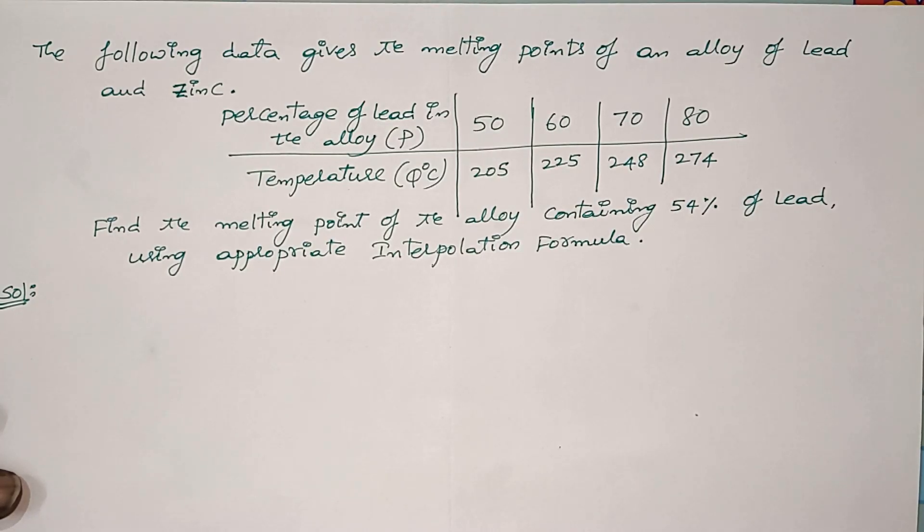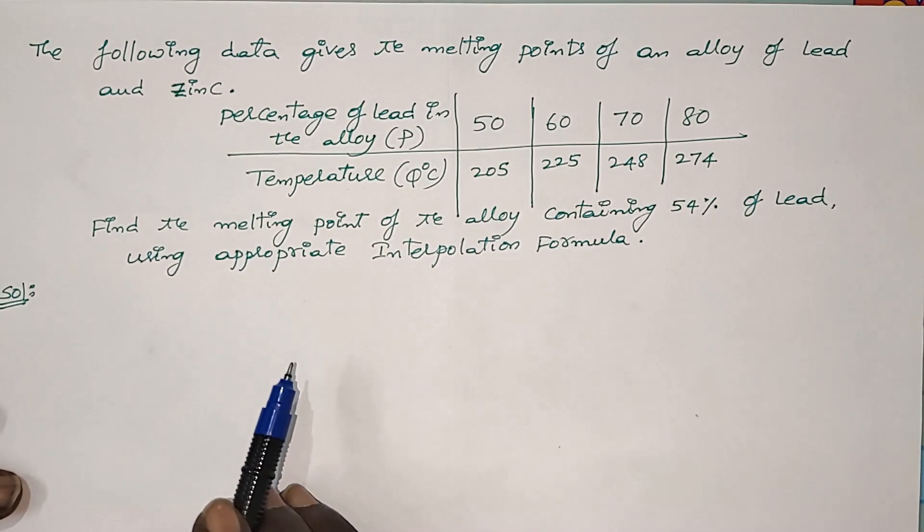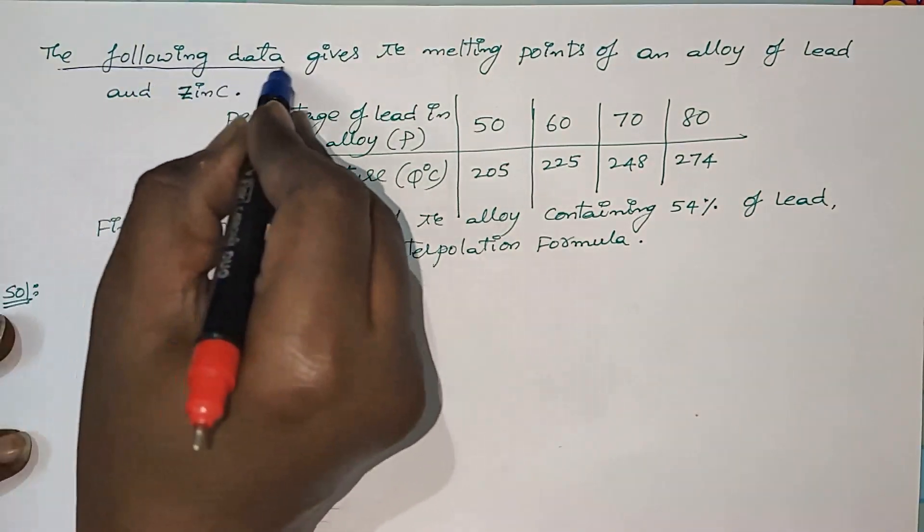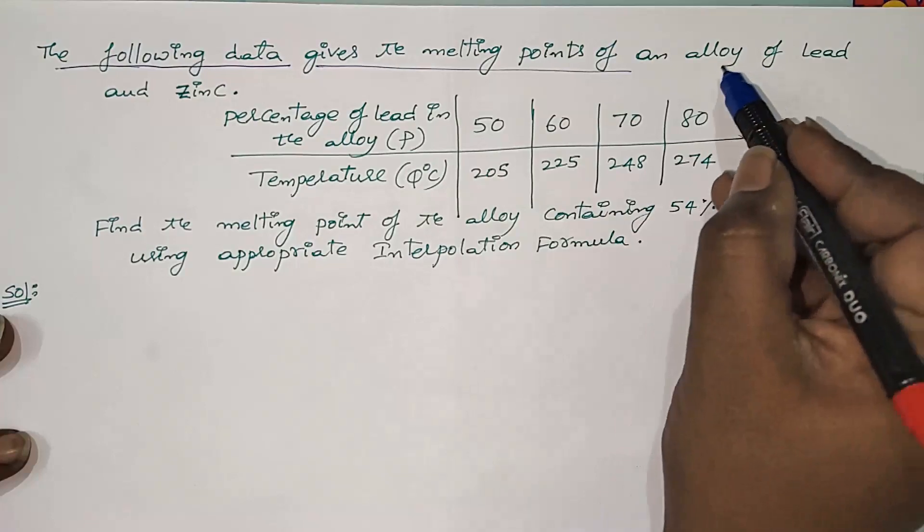Hi everyone, welcome back to our channel. In this video I would like to give an example on interpolation which is a physical application problem. The following data gives the melting points of an alloy of lead and zinc.